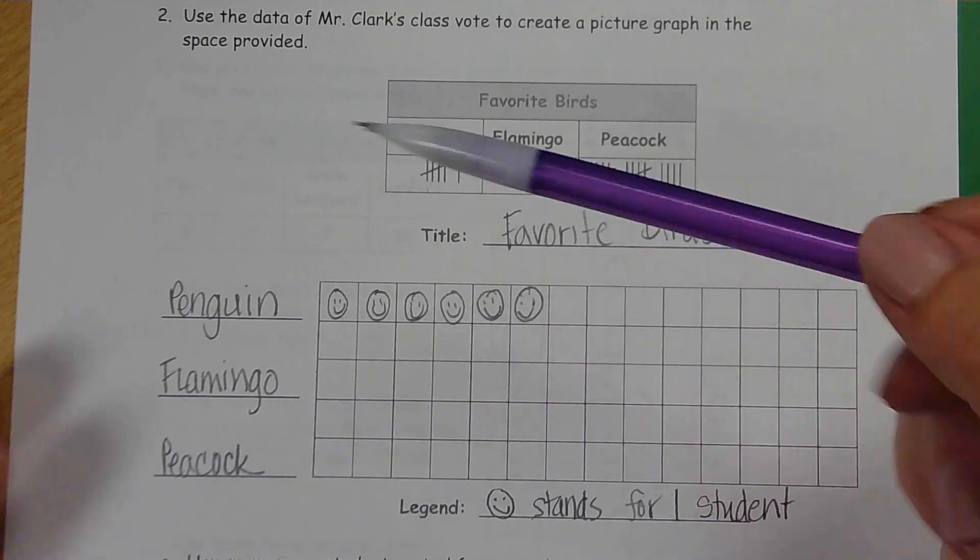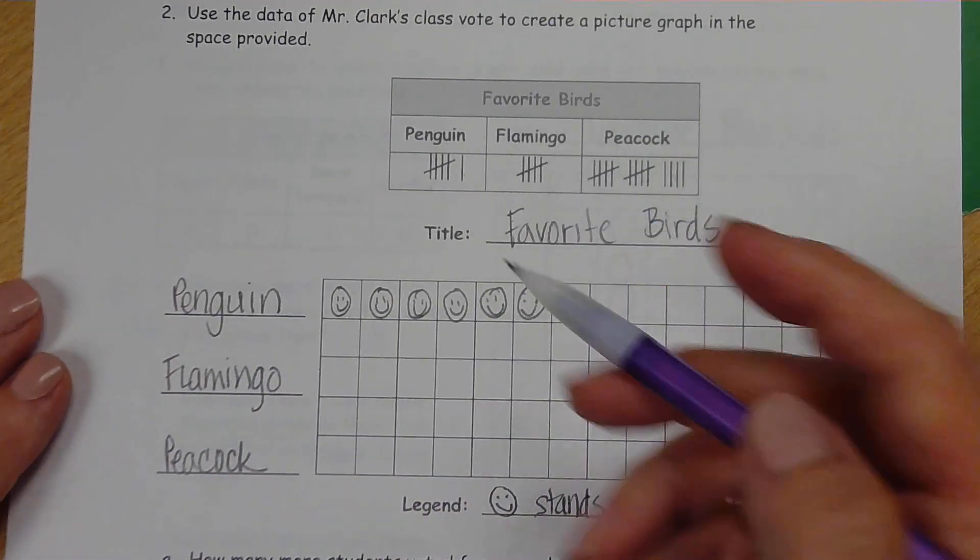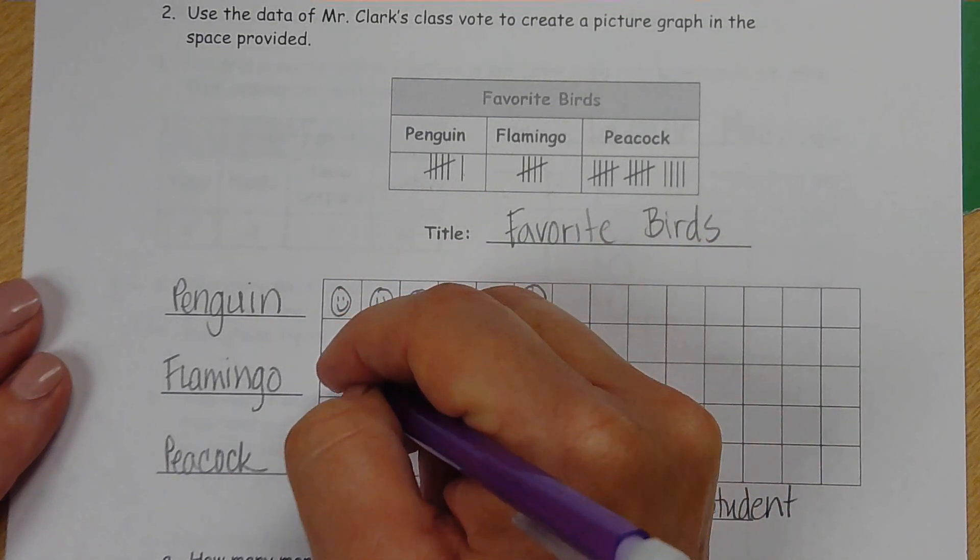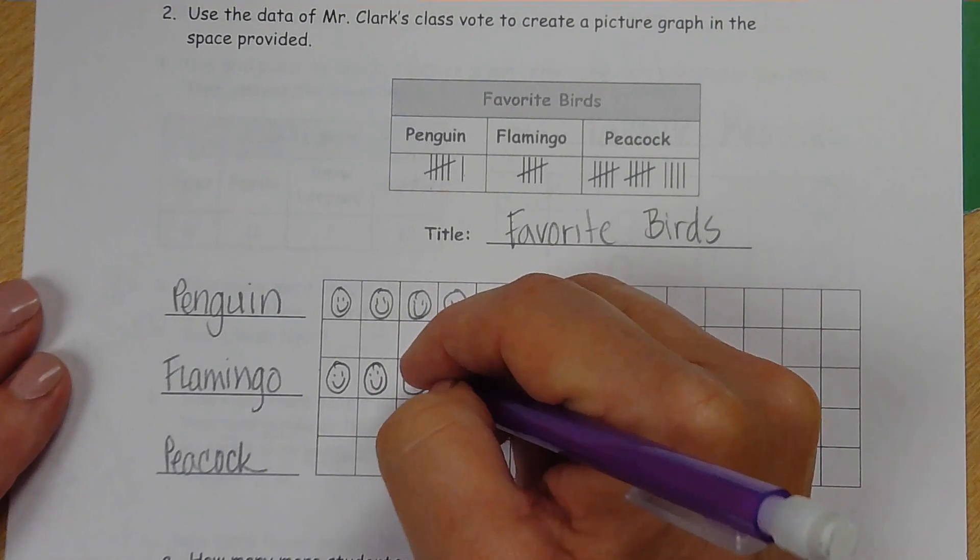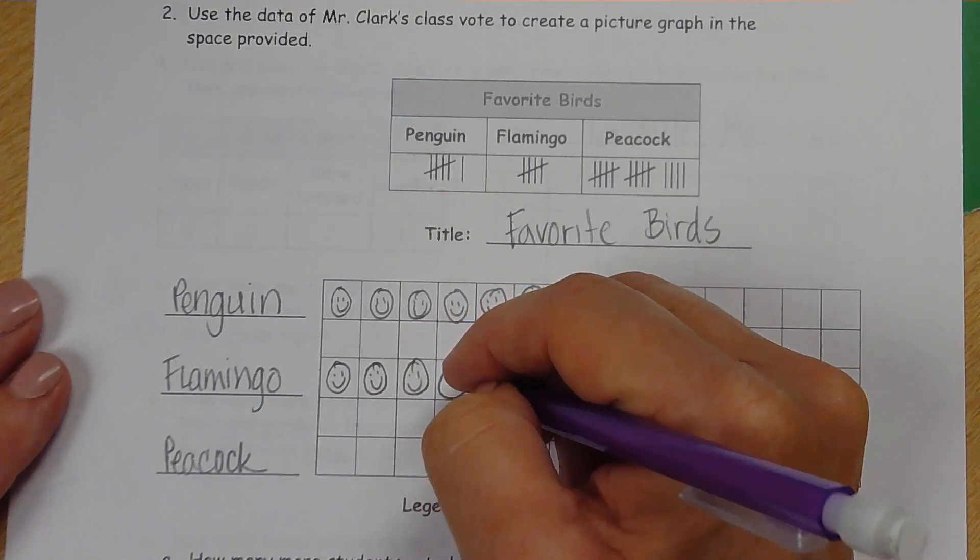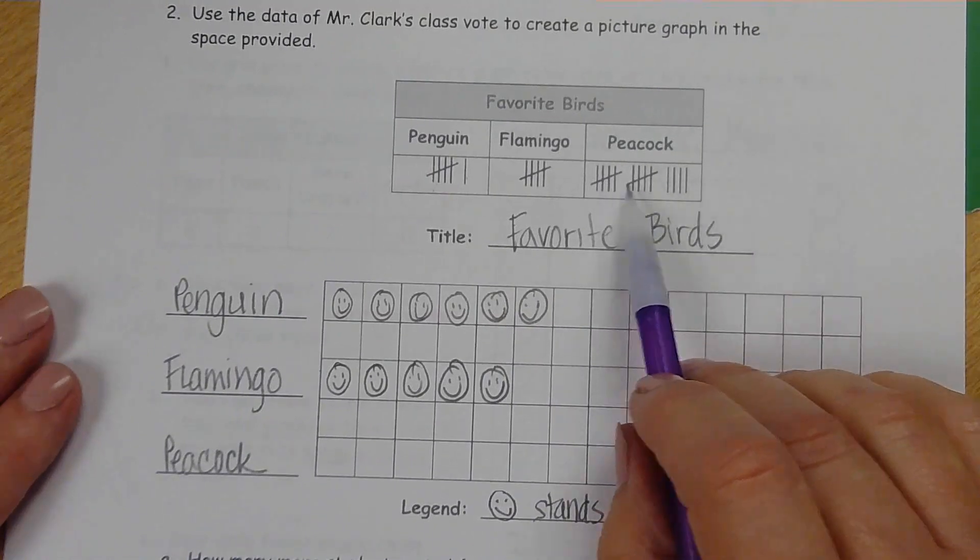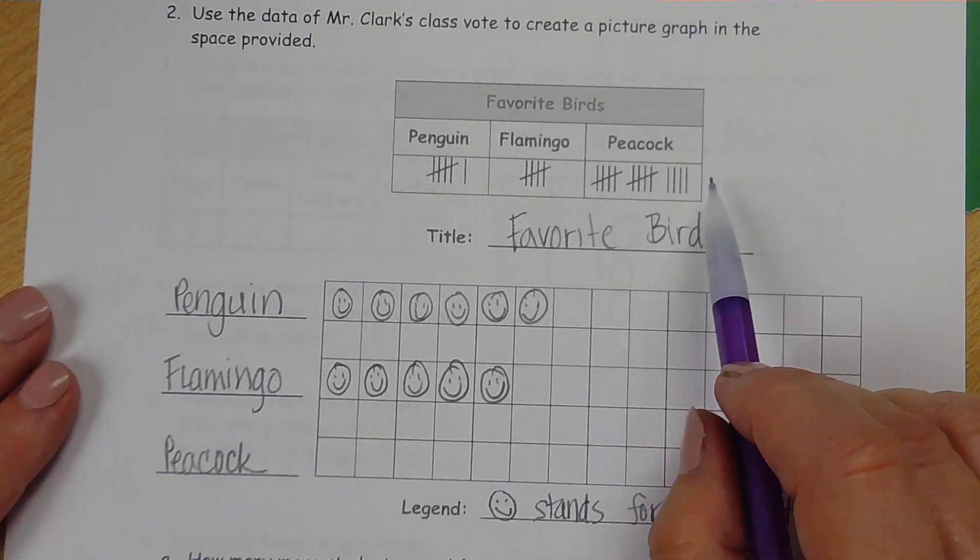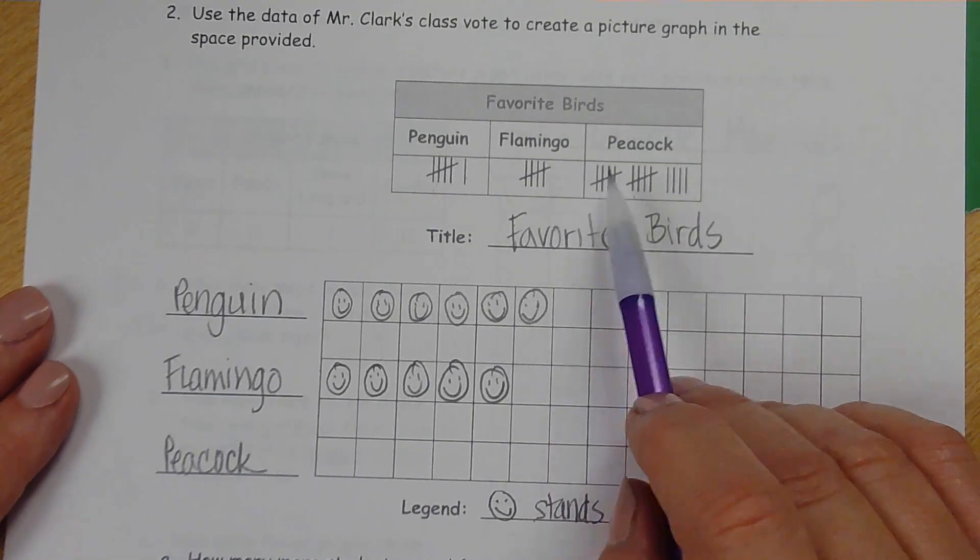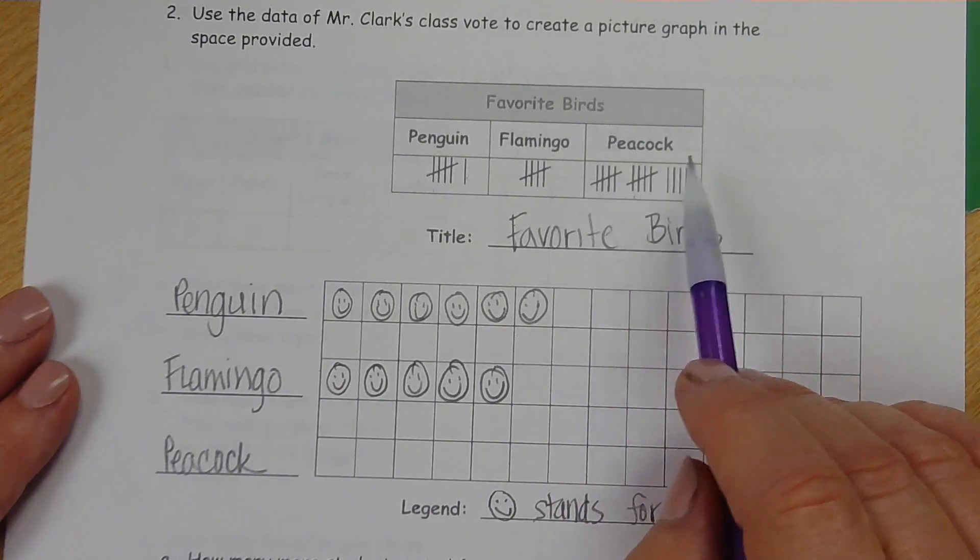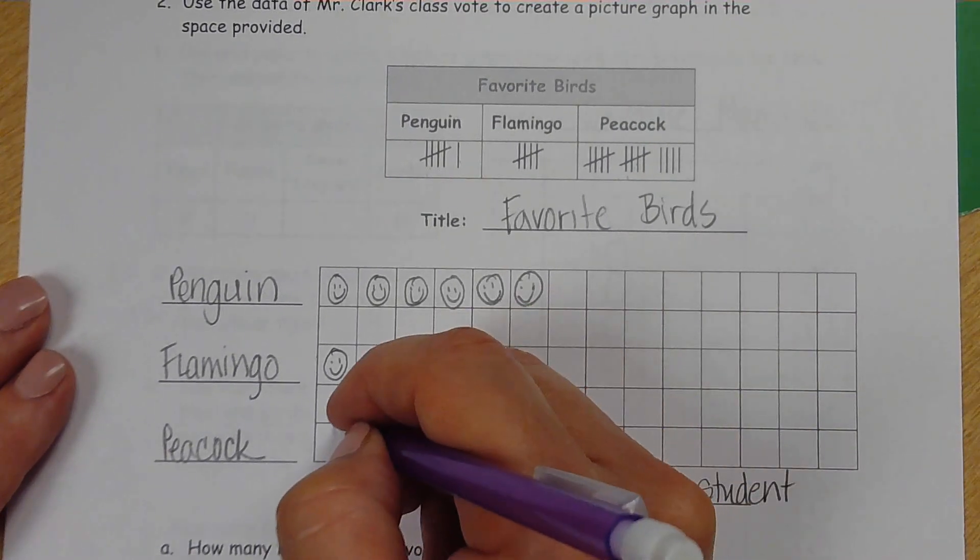They're skipping a line, even though this one goes the other direction. Flamingos, five. And then the peacock. Look how many people liked peacocks. We have a group of five and a group of five and four more. So five, ten. Ten and four is fourteen. Oh my goodness.